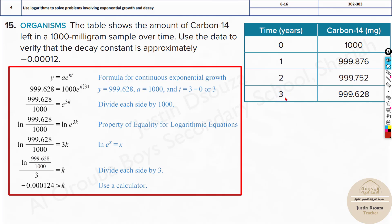Substitute. We will take the last value at time 3. So t is 3, and the final population is 999.628. The initial population is 1,000. Just put this entirely in the calculator. You can directly put it.